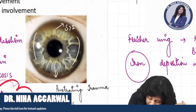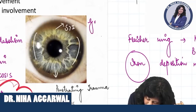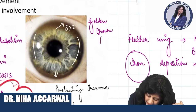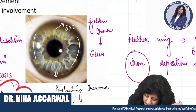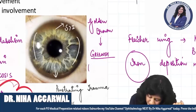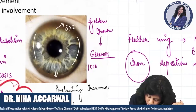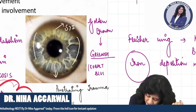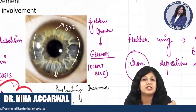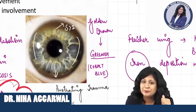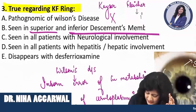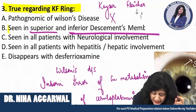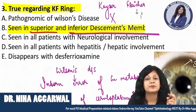This statement is correct. Its colour is golden brown. It looks greenish actually because you are looking at it through the cobalt blue filter, but otherwise it is golden brown in colour. So this statement is right — it is seen in the superior and inferior Descemet's membrane.